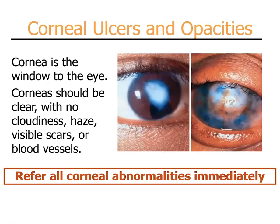Corneal ulcers and opacities: the cornea is the window to the eye. It is normally quite clear, with no visible haze, cloudiness, scars, or blood vessels. Through the clear cornea, one can usually see the round pupil of the iris. If any of these things are noted to be abnormal, you should refer all corneal abnormalities to an eye clinic immediately.